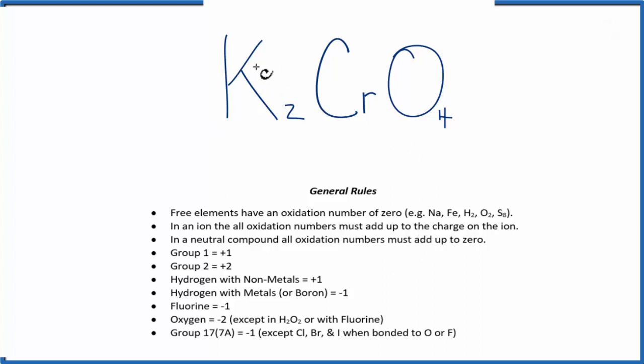So we can see that group 1, elements in group 1 like potassium here, have an oxidation number of plus 1. Put that up there.